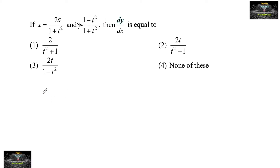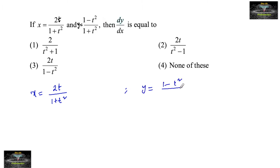Given x is equal to 2t upon 1 plus t square with parameter t, and y is equal to 1 minus t square upon 1 plus t square. To find dy by dx, let us first differentiate with respect to t.